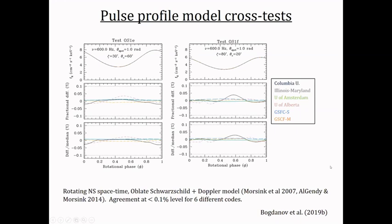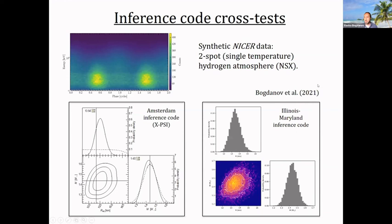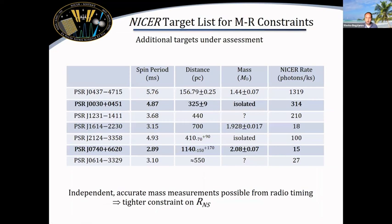These are the targets we've selected for these measurements, and you'll recognize a couple that Thankful was talking about: J0740 — the most massive pulsar — and also J1231. The advantage of using these objects is that you have possibilities for independent mass measurements from radio timing, and you can get pretty accurate distances to them. J0437, the first one listed, is the nearest millisecond pulsar and has the best measured distance of any object outside of the solar system, which is very helpful for these analyses. The two already in bold face are the ones we've already analyzed, and the next two talks are about J0740.